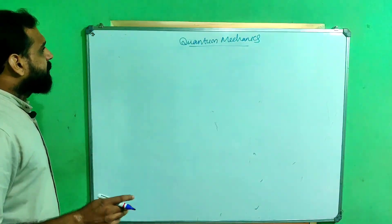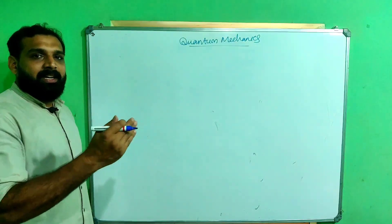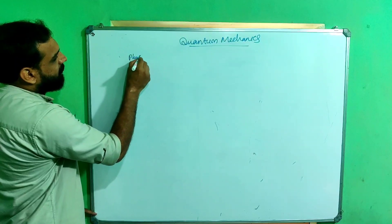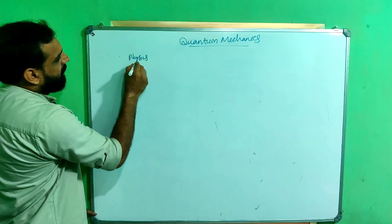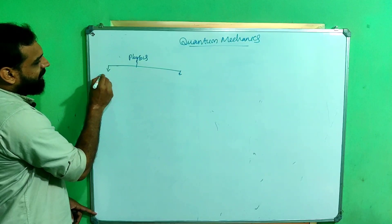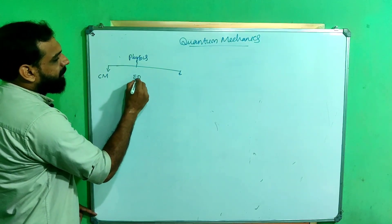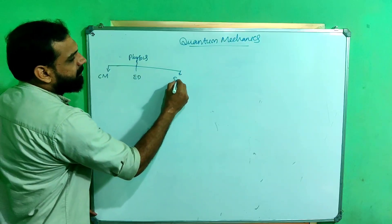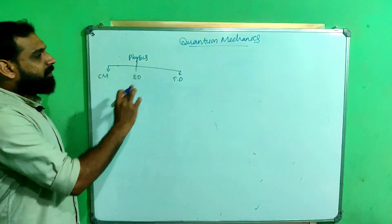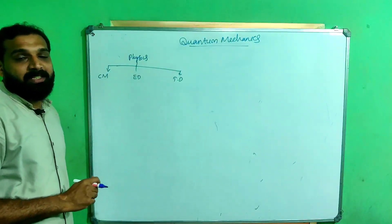At the end of the 19th century, physics mainly consisted of three well-known areas: classical mechanics, electrodynamics, and thermodynamics. These were the major papers in physics at the end of the 19th century.